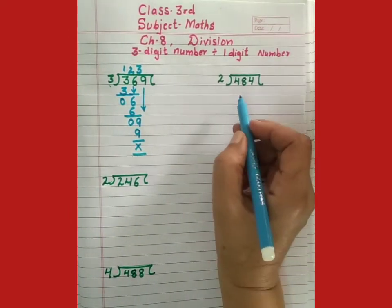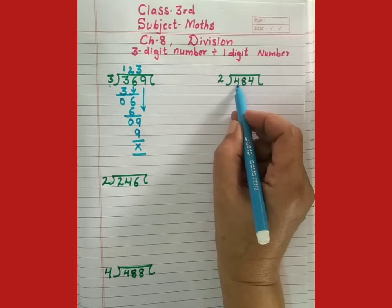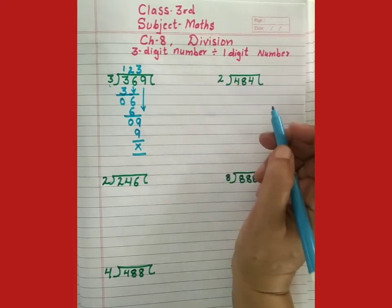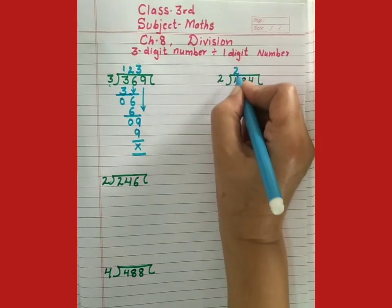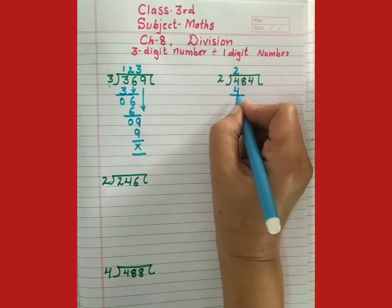In next sum, we have to divide 484 by 2. Sabse pehla number kya hai. Ab 2 ke table me 4. 2 ones are 2. 2 twos are 4.